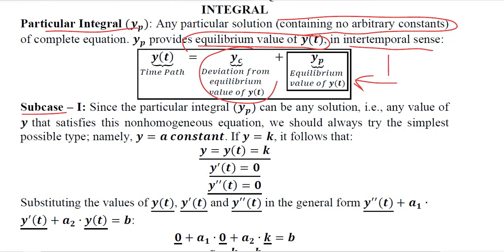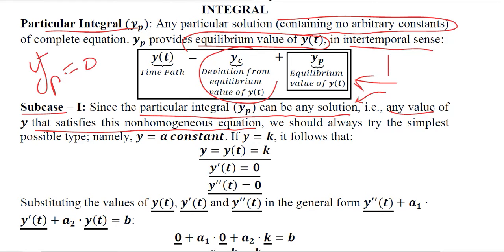Let's start with subcase 1. In this subcase, the particular integral can be any solution that is the equilibrium value — any value of Y that satisfies the non-homogeneous equation. In the homogeneous case, Yp was equal to 0, but here in the non-homogeneous case we need to find the value of Yp. We should try the simplest possible type to begin with.